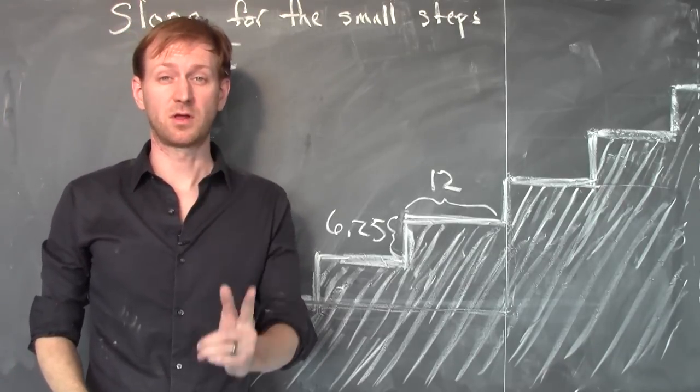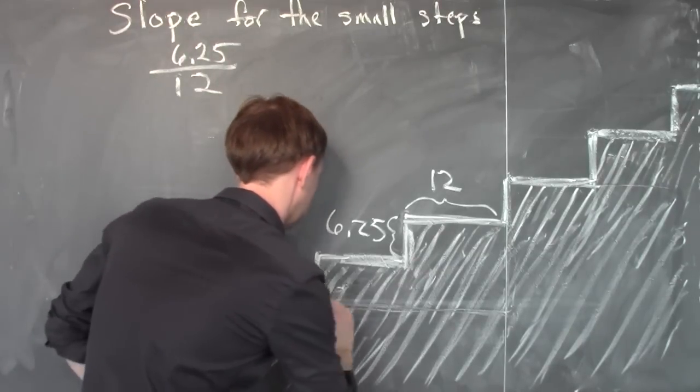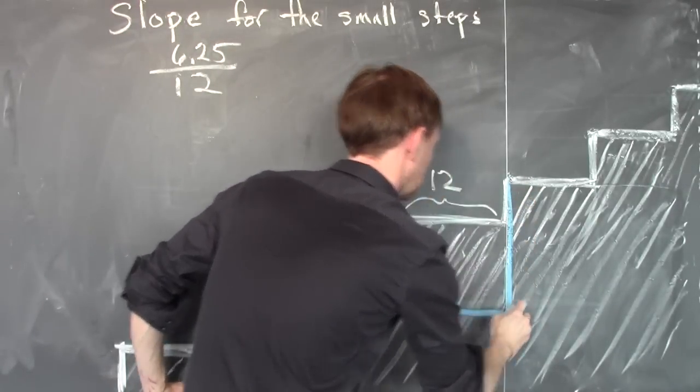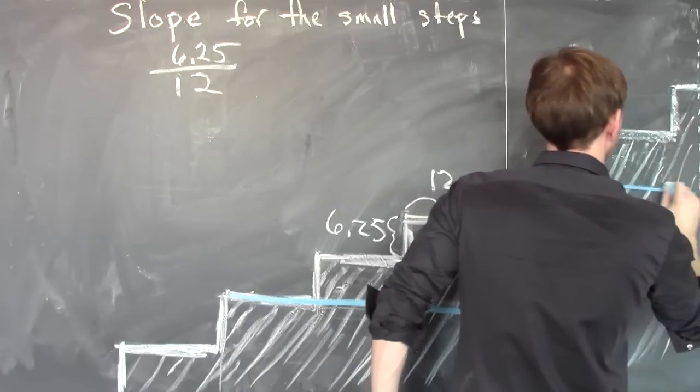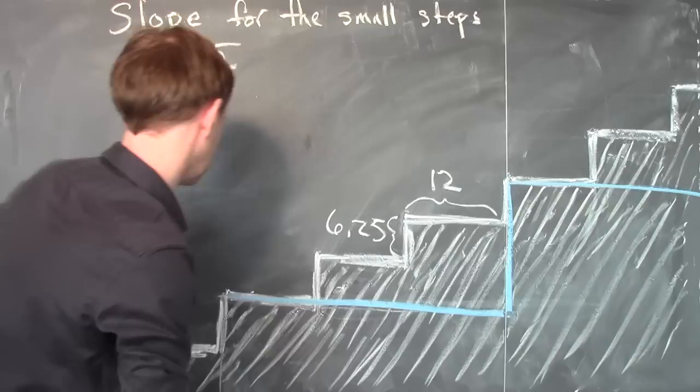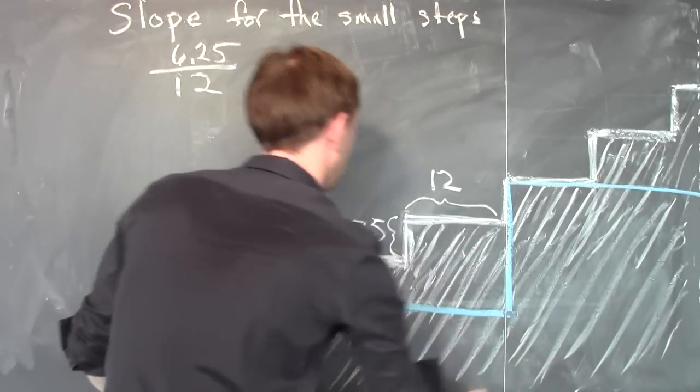But there were also large steps. Let's draw those in. Here we go. So this was one of the large steps, and then we had another one. It climbs over there and goes down like this. This is the large step.